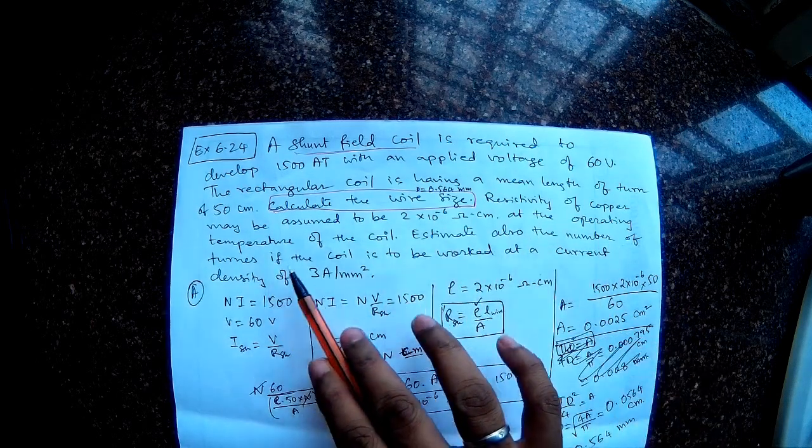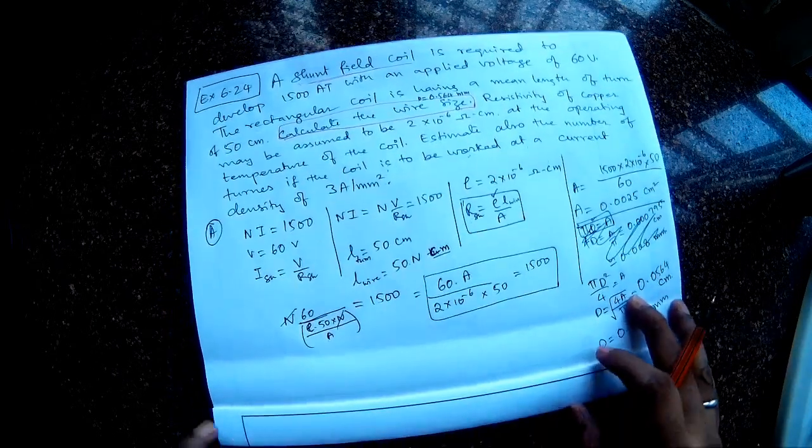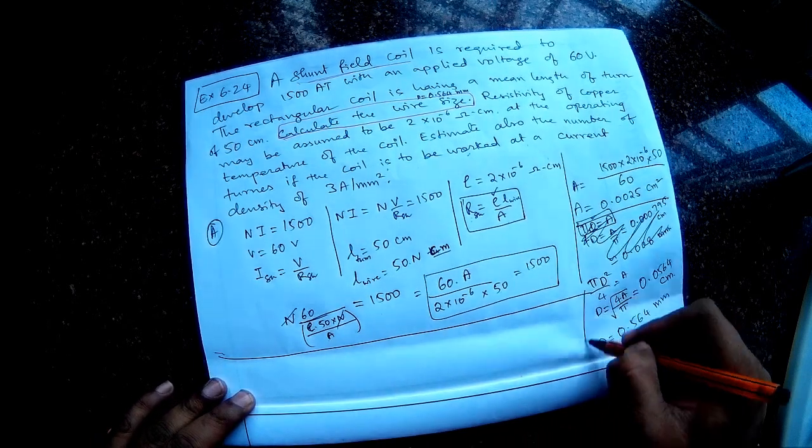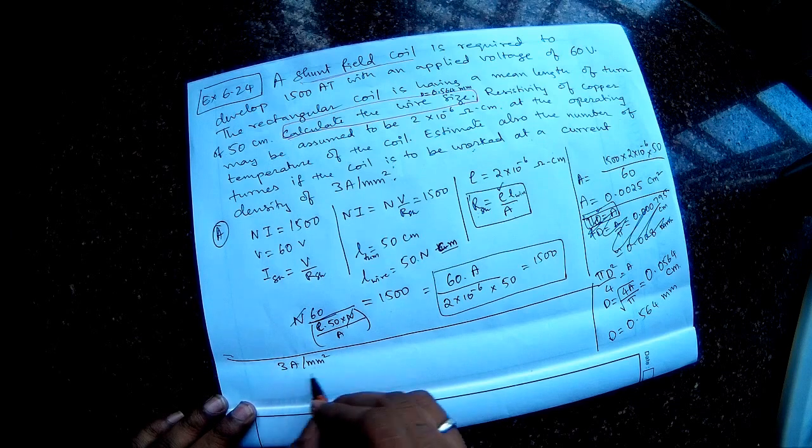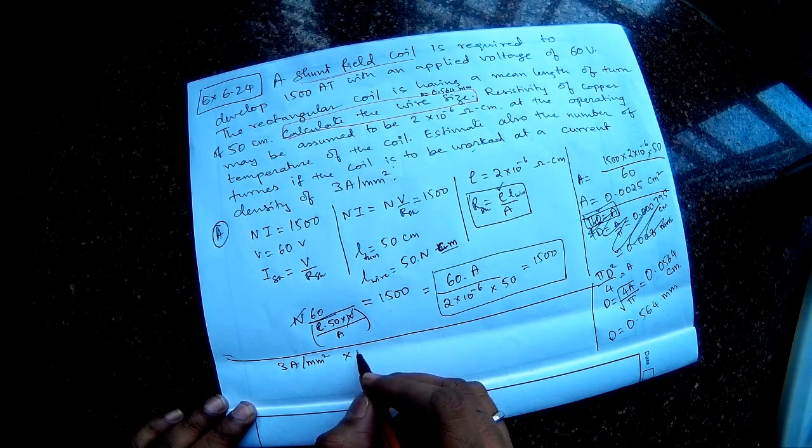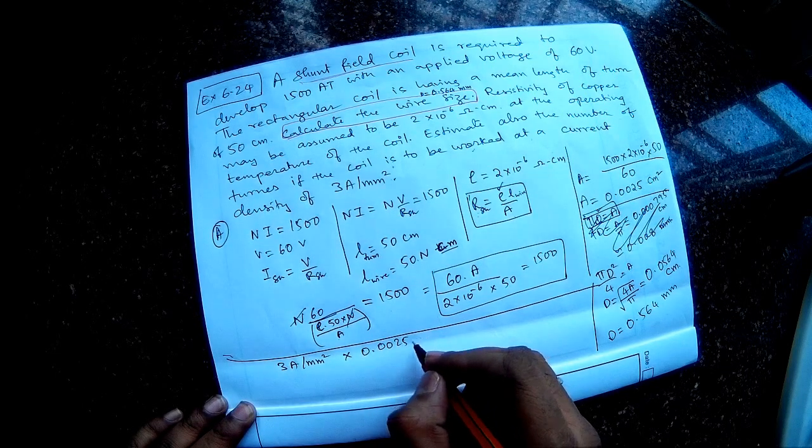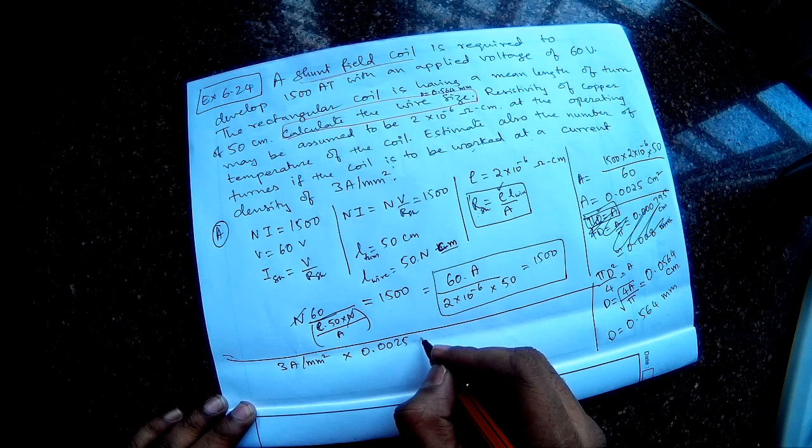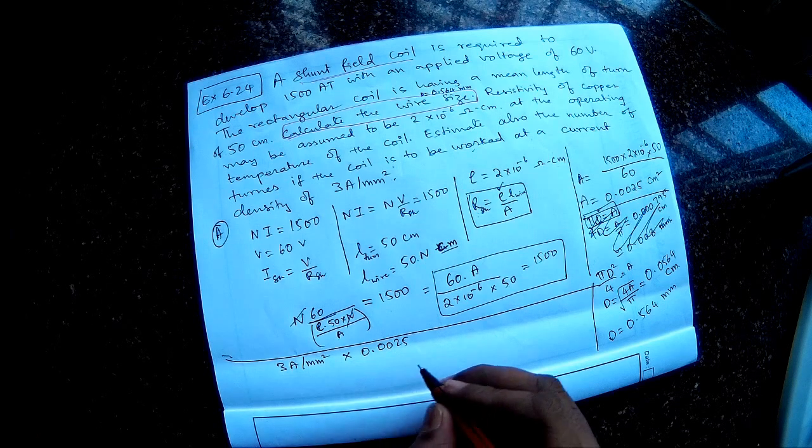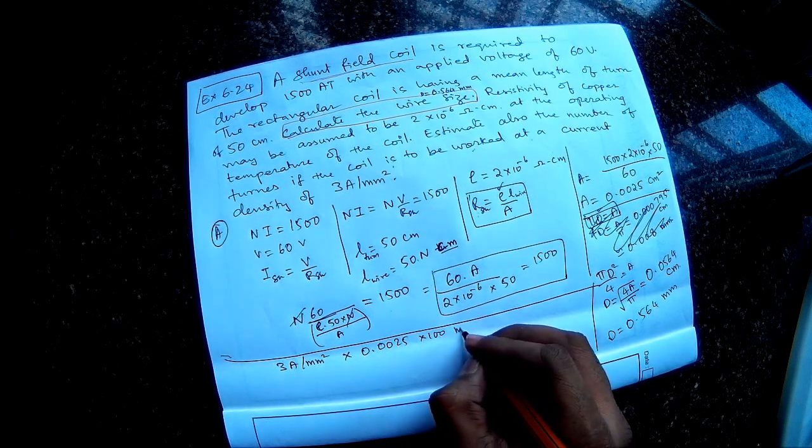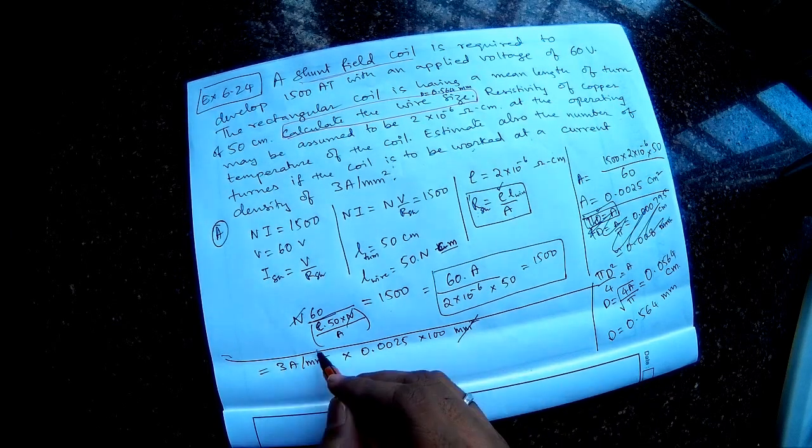Estimate also the number of turns if the coil is to be worked at a current density of 3 amperes per mm square. So let me use this place here. So current density is 3 amperes per mm square. So this multiplied by the cross section area, 0.0025 centimeter square. To convert into mm square, because 1 centimeter is 10 mm, so I will multiply it by 100. So this will be mm square. So this quantity, if I cancel the mm square and then if I multiply all this, two zeros, I will just do it like this.